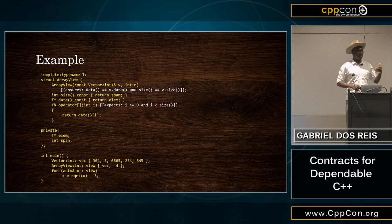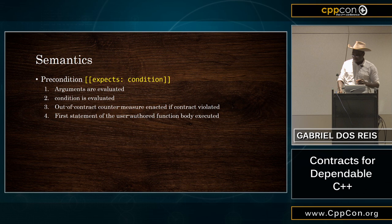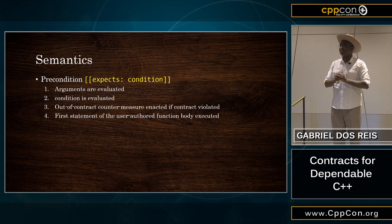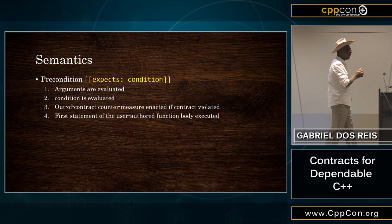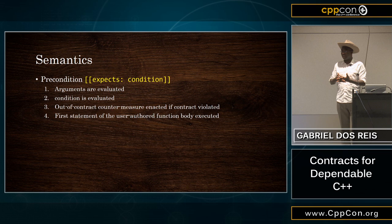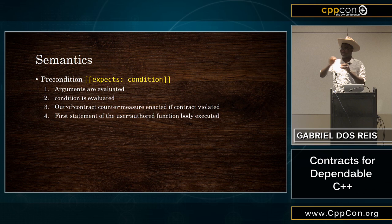So what is the semantics of the precondition? You start by evaluating the arguments — that's the first thing you do. Next, the compiler evaluates the condition of the precondition. That's a predicate: something that is either true or false. If it is false, then you're out of contract and some countermeasure is deployed — it could be abort, throw an exception, or just ignore, depending on your setting. Then control is transferred to the definition of the operation, to the first statement of the function. That's the semantics for precondition.